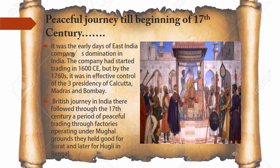It was the early days of the East India Company's domination in India. The company had started trading in 1600 CE, but by the 1760s it was in effective control of the three presidencies of Kolkata, Madras and Bombay. Throughout the 17th century, there was a period of peaceful trading through factories operating under Mughal grounds, held first for Surat and later for Hooghly in Bengal. When British started trading, it was done very peacefully and they were solely traders at that time, under the supervision of Mughal emperors.